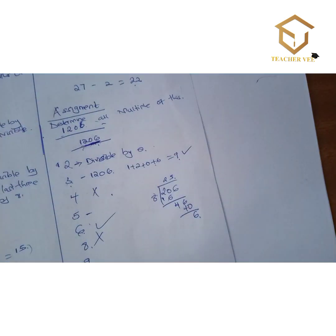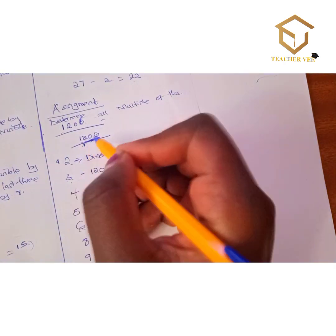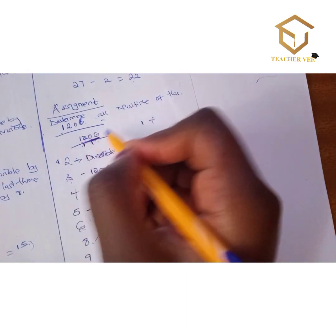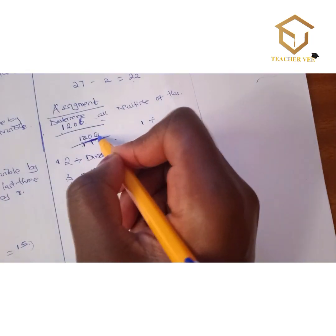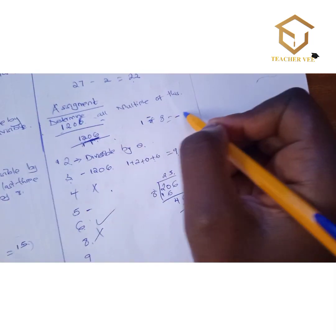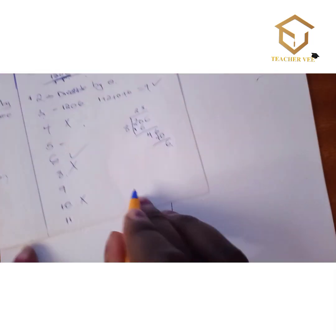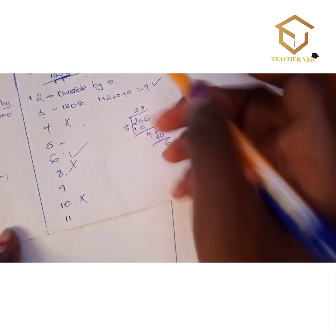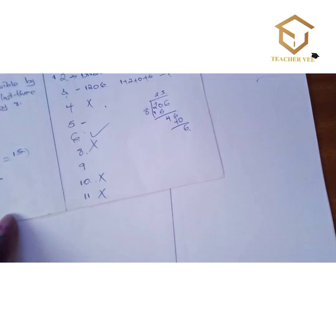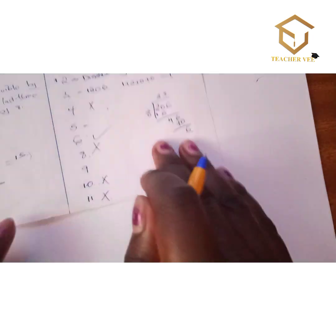Divisibility test of 11: get the difference between the sum of digits in odd positions and even positions. The odd position digits are 1 and 0, giving 1; the even position digits are 2 and 6, giving 8. The difference is negative 7, so this number is not divisible by 11.